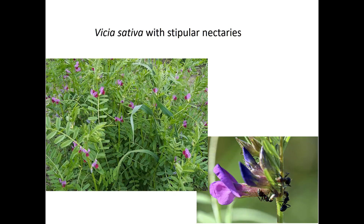Here is a local example of a plant that has mutualisms with ants for protection. Vicia sativa has little stipular nectaries — they're stipules but also nectaries. They're not part of the flowers; they occur at leaf nodes and exude sugar as a way of recruiting ants to constantly defend the plant. If you ever pick up a vicia, you're probably going to be picking up a handful of ants at the same time.